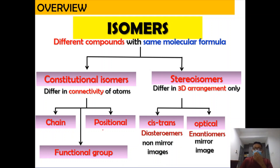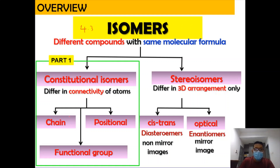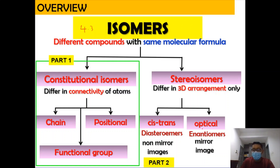This is the overview of subtopic 4.3: constitutional isomers — chain, positional, and functional group — were covered in Part 1; cis-trans was covered in Part 2; and in this video, Part 3, you learned about optical activity — the ability of a chiral molecule to rotate plane polarized light — and enantiomers, where you draw the 3D structure and its mirror image. That covers all three parts of isomerism in subtopic 4.3. See you again some other time. Bye!